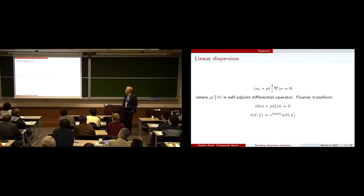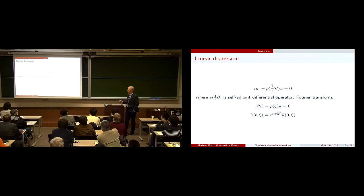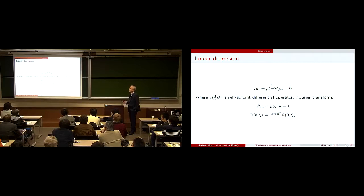What we look at is a time derivative with space dimensions. There is a differential operator which, after the Fourier transform, becomes a multiplication. If this symbol is real, then this defines a self-adjoint operator. The Fourier transform transforms this problem into one where, on the Fourier side, it's an ODE which can easily be solved, and that gives some information about the solution.